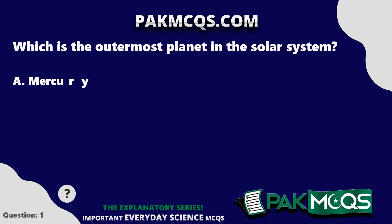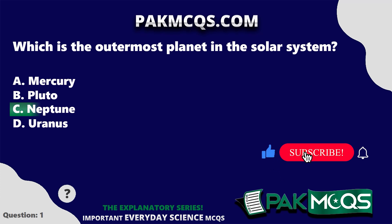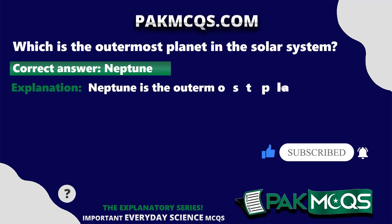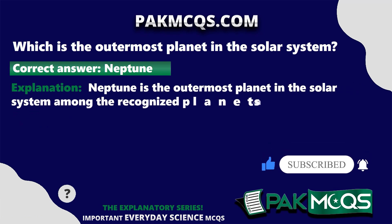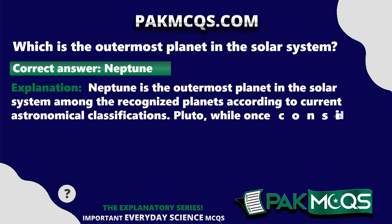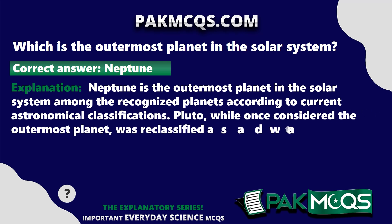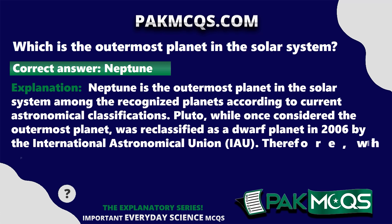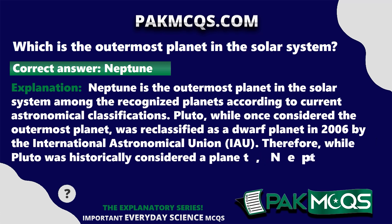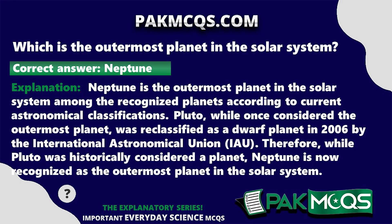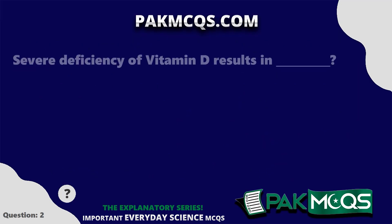Which is the outermost planet in the solar system? Neptune. Neptune is the outermost planet in the solar system among the recognized planets according to current astronomical classifications. Pluto, while once considered the outermost planet, was reclassified as a dwarf planet in 2006 by the International Astronomical Union. Therefore, neptune is now recognized as the outermost planet in the solar system.